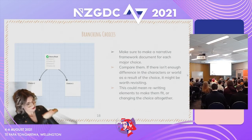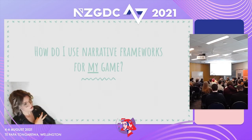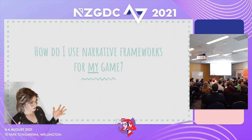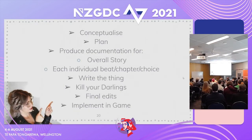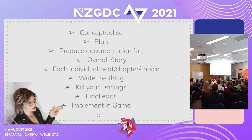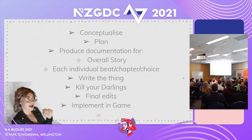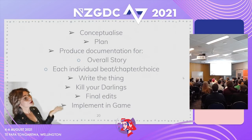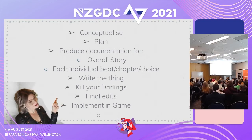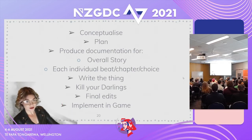Compare your branching frameworks — if there's not enough difference, it might be worth revisiting. So we've discussed what narrative frameworks are, why we want to use them, and what they look like. Here are the simple steps for how to use them for your game: conceptualize, plan, and produce documentation for your overall story as well as each individual beat, chapter, and choice. Then write the things, do your first edit, kill your darlings, do your final edits, and implement in game. Documentation in this case means narrative frameworks — because documentation is not always narrative frameworks, but narrative frameworks are always documentation.